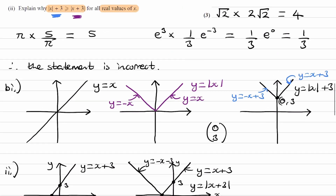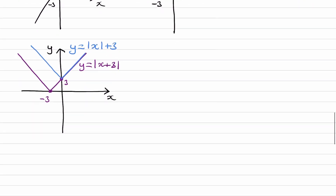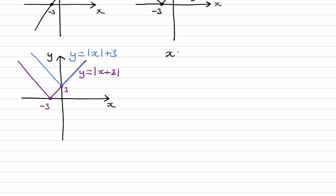Why is blue greater than or equal to purple? We can see this from the graph. For x greater than or equal to 0, the modulus of (x plus 3) equals modulus of x plus 3 — the two lines overlap, so the functions are equal to one another. For x less than 0, on the left-hand side of the y-axis, for every negative x value, purple is beneath the blue line, meaning the y-coordinate for the purple line is less than the y-coordinate for the blue line.